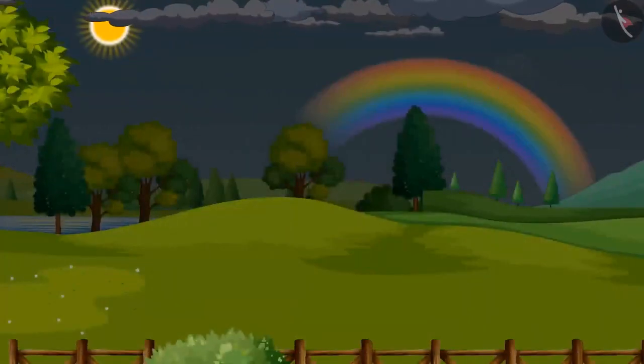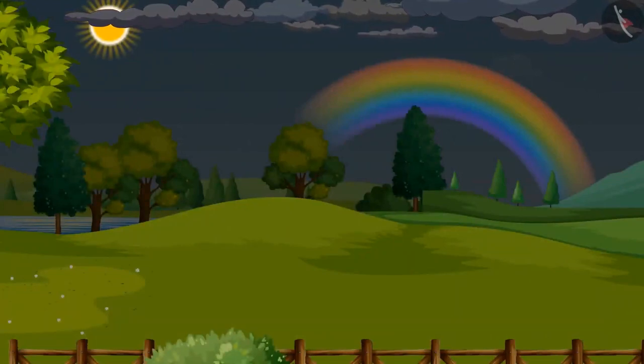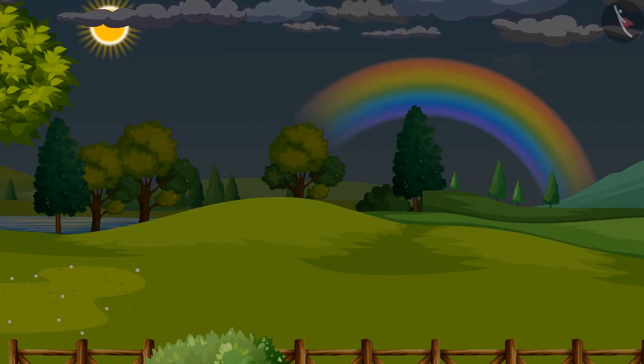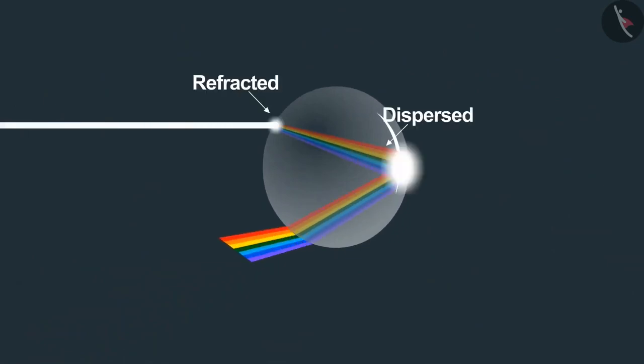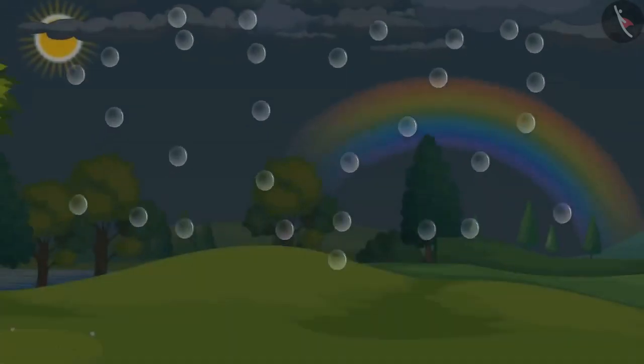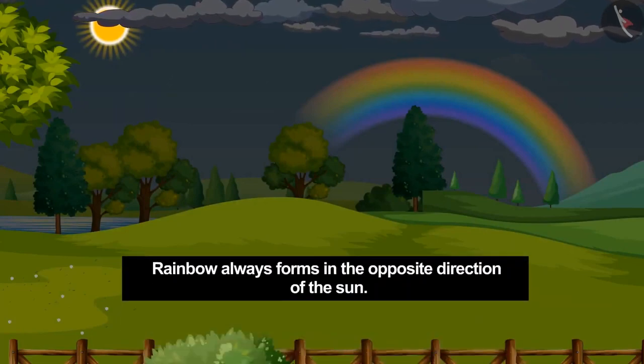So is the reason for the formation of rainbow also the dispersion of white light coming from the sun? Yes, but we do not see any prism. Then how does the process take place? After the rain, small drops of water are present in the atmosphere. Through these drops, the light gets refracted, gets dispersed into seven colors, and then reflects internally and falls on our eyes, which is why we see the rainbow. It is to be kept in mind that the rainbow always forms in the opposite direction of the sun.